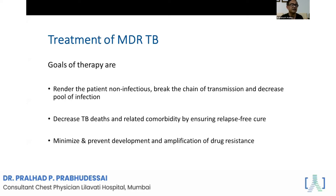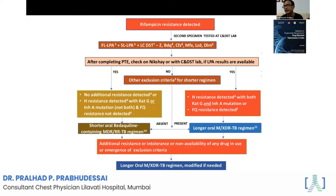Treatment goals for multidrug-resistant tuberculosis are to make the patient non-infectious as early as possible so that the transmission chain can be prevented, decrease TB-related death and comorbidities, ensure relapse-free cure, and minimize and prevent the development and amplification of drug resistance. The whole idea of drug-resistant treatment is to decrease mortality, improve patient outcome, improve morbidity, and prevent spread of disease.